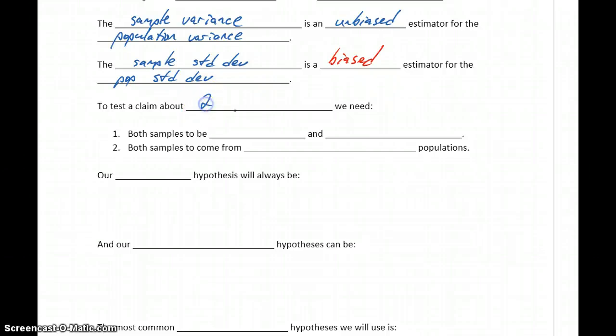To test a claim about two variances, we need a couple of conditions to be met. We need our samples to be random and independent. We'll assume that condition is met, and we need to verify the second condition: that both samples come from normally distributed populations.